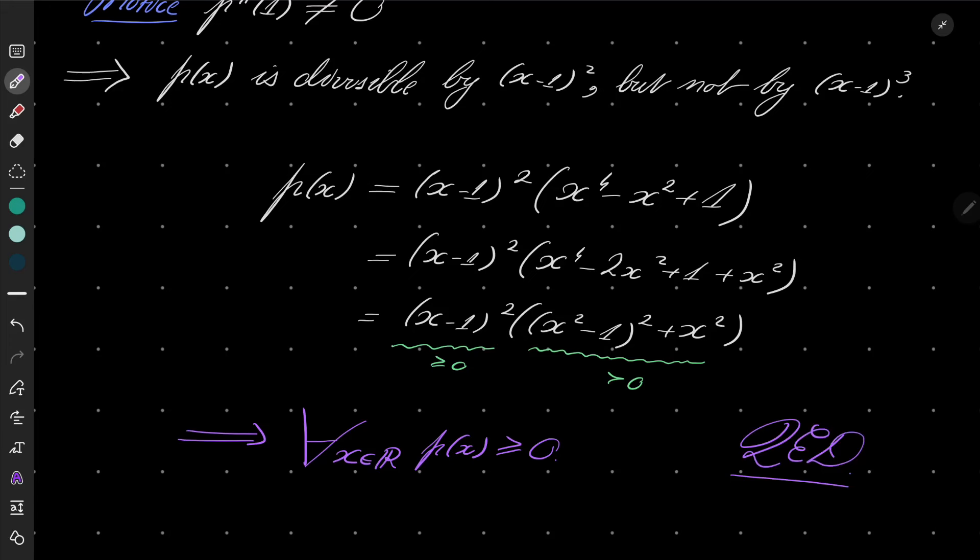Before we go, let's notice that the only possibility for our polynomial to be equal to 0 is for x equals 1. For every other real x, our inequality is in fact strict. Thank you for watching and I will see you next time. Goodbye.